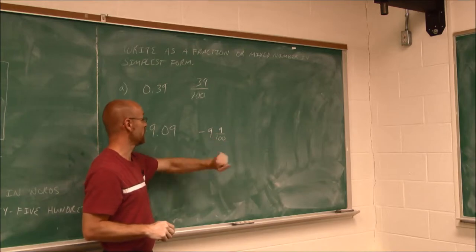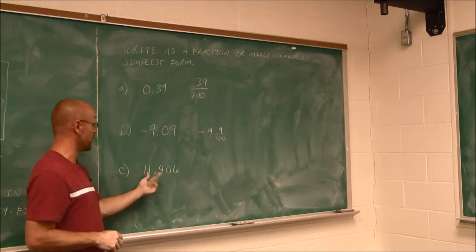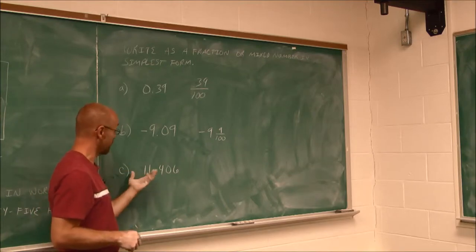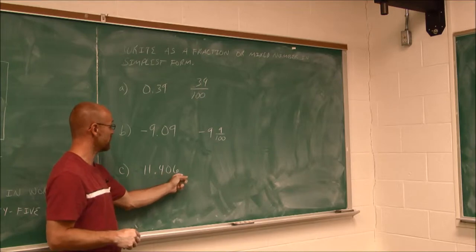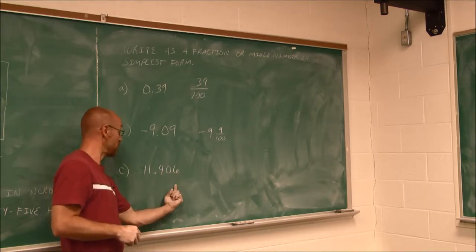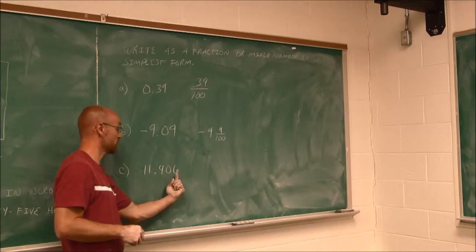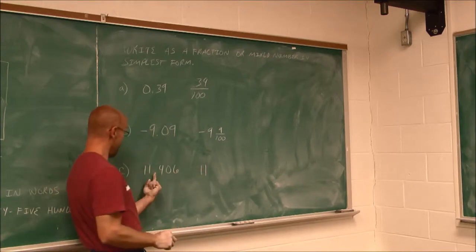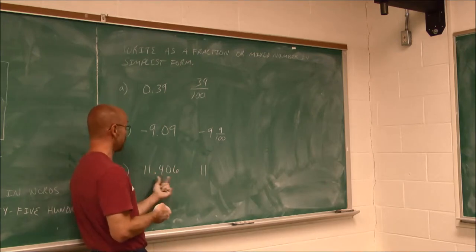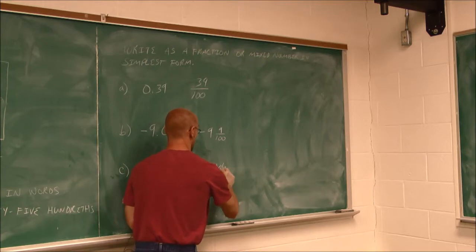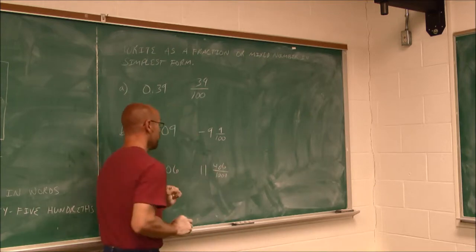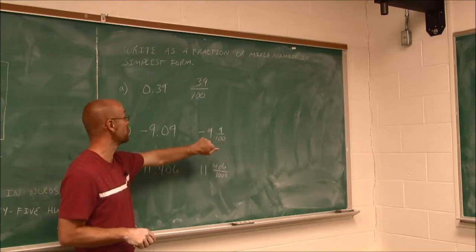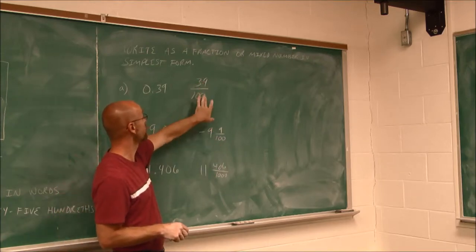What about this one? I see I have values to the left of the decimal greater than 1, so I have 11. And then here I have 406. This is in the thousandths — tenths, hundredths, thousandths. So I would write this out as 11 and — a decimal is always read as 'and' — 406 thousandths. I couldn't reduce 9 one-hundredths or 39 one-hundredths — those are already in simplest form.